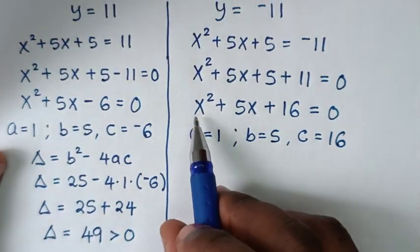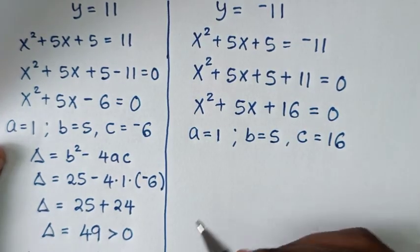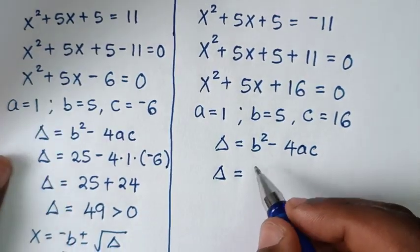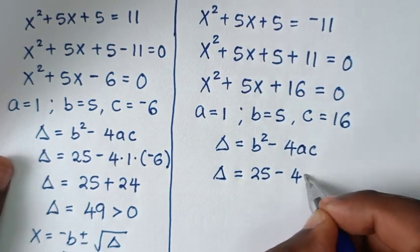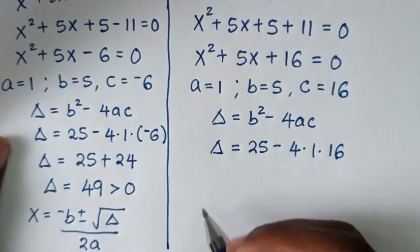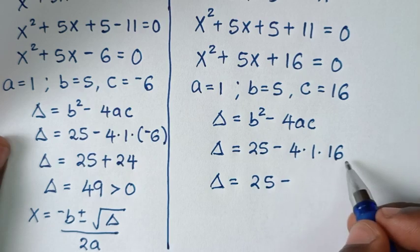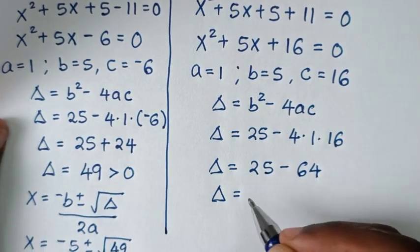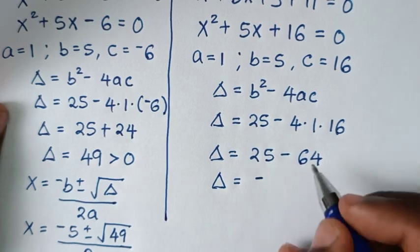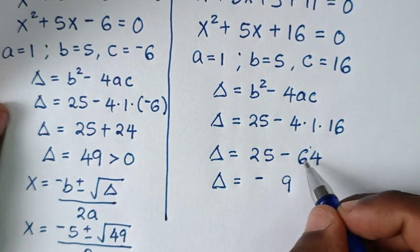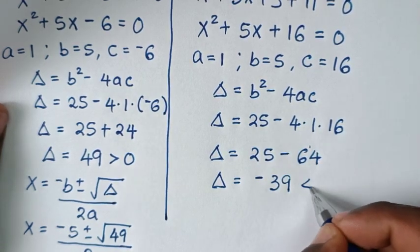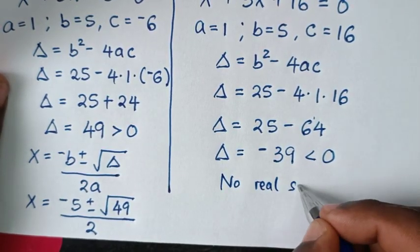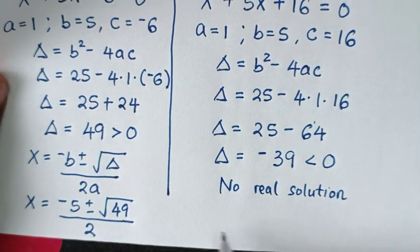Let's check if this quadratic equation gives a real solution using the discriminant formula: discriminant equals b squared minus 4ac, which is 5 squared minus 4 times 1 times 16, equals 25 minus 64, equals negative 39. Since the discriminant is less than 0, there is no real solution or real roots. So this solution is rejected.